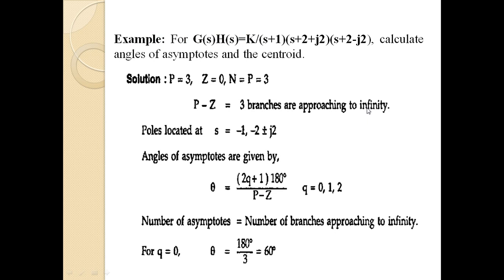For example, given G(s)·H(s) = K / [(s+1)(s+2+j2)(s+2−j2)], we need to calculate the angle of asymptotes and the centroid. The open loop transfer function has three poles and no zeros since the numerator has no s-function. So p=3, z=0, and the number of branches equals p = 3. All three branches approach infinity, with poles at s = −1 and s = −2 ± j2.